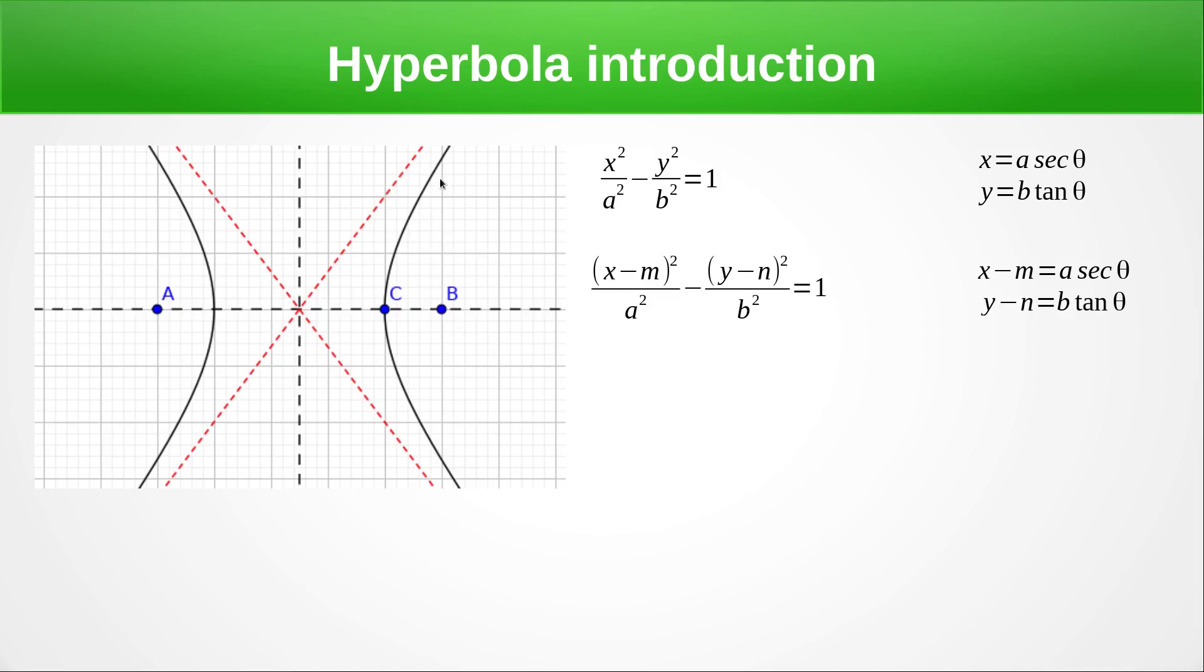One thing to notice about a hyperbola, we do have our apex point here. We have another one here and we have our foci here and here. And these lines here, the asymptotes that the hyperbola gets closer and closer to. And they're of the form, y equals plus or minus b over a. And that's the b and a that we've got here.